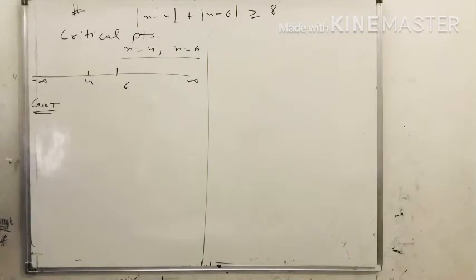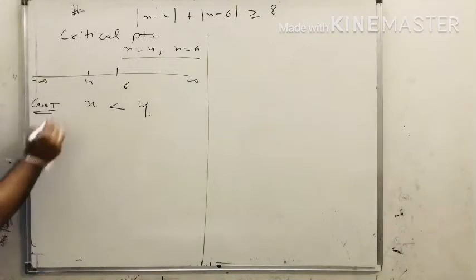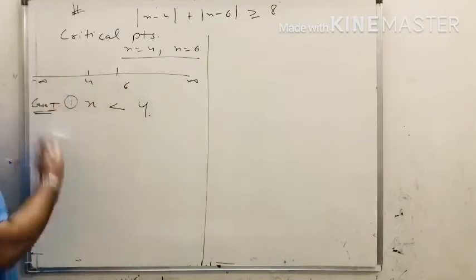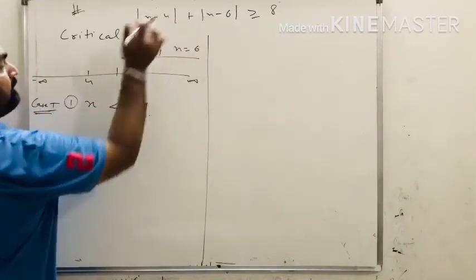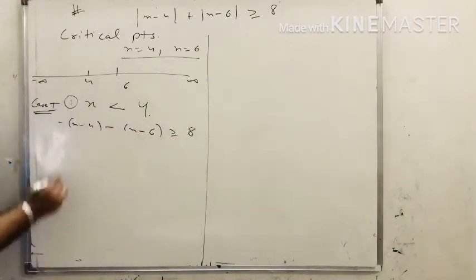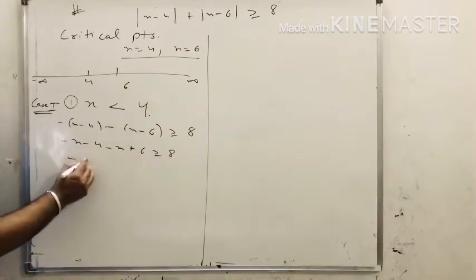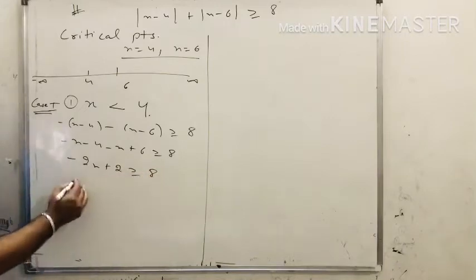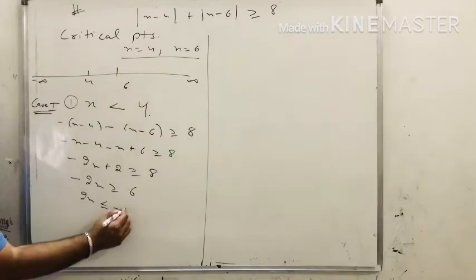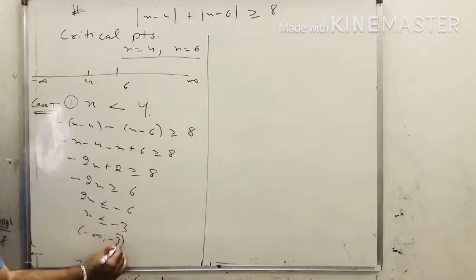Case 1: x is less than 4. If x is less than 4, it is also less than 6, so both modulus values become negative. We get minus x minus 4 minus x minus 6 greater than or equal to 8, which simplifies to minus 2x plus 2 greater than or equal to 8. So minus 2x greater than or equal to 6, meaning x less than or equal to minus 3. The interval is minus infinity to minus 3.